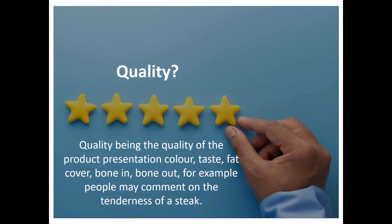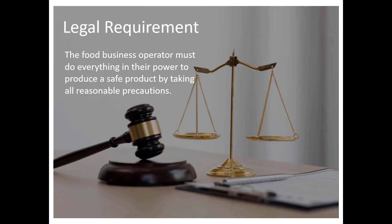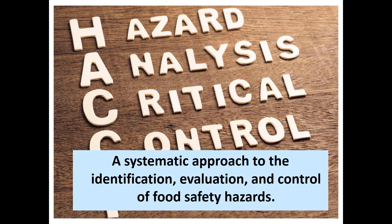Having a food safety system is a legal requirement for food businesses because food businesses must do everything in their power to produce a safe product. No matter where in the world, if you're a food operator there will be laws requiring producing product that is safe for consumption. HACCP is a systematic approach to the identification, evaluation and control of food safety hazards — a proactive preventive approach where food operators review their processes and determine if there are any potential food safety hazards and remove those hazards as best possible.